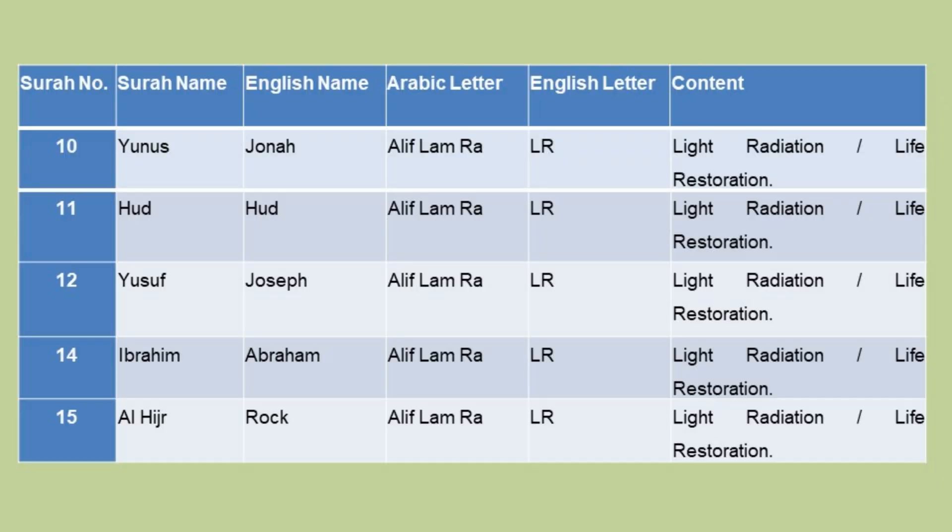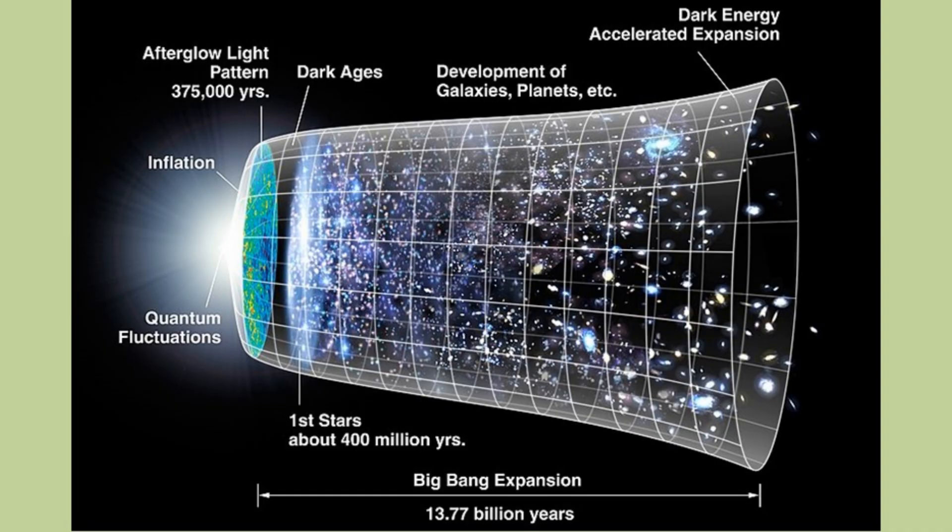Chapter 14 and Chapter 15 — Alif Lam Ra — LR — Light Radiation, Life Restoration. Chapter 15 is about the creation of the universe and galaxies.